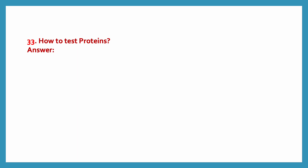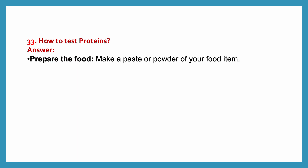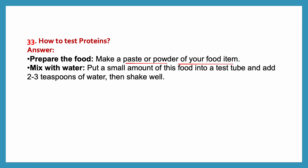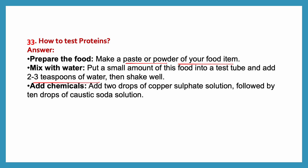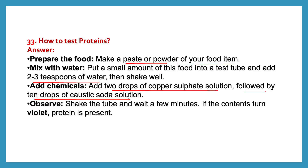How to test for proteins? Make a paste or powder of your food item and mix with water. Put a small amount into a test tube, add 2 to 3 teaspoons of water and shake well. Then add 2 drops of copper sulfate solution followed by 10 drops of caustic soda solution. Shake the tube and wait a few minutes. If the contents turn violet, protein is present.